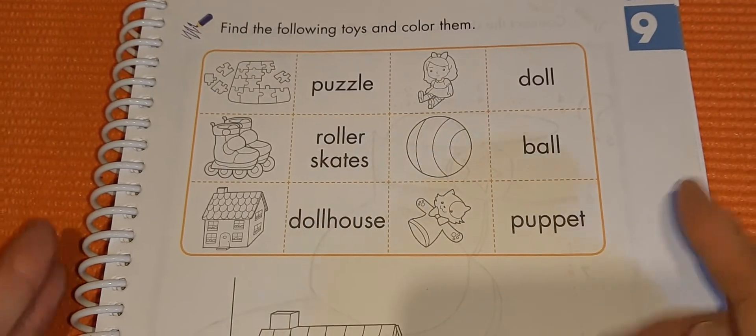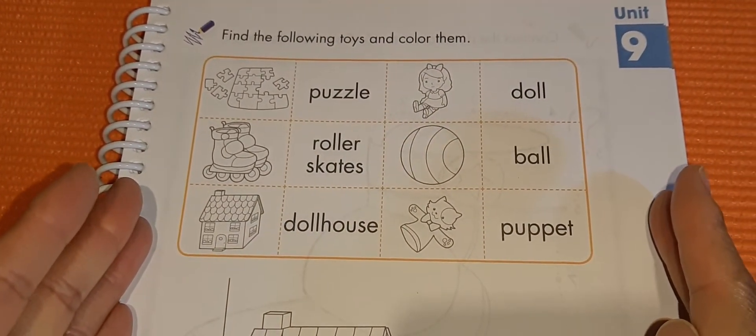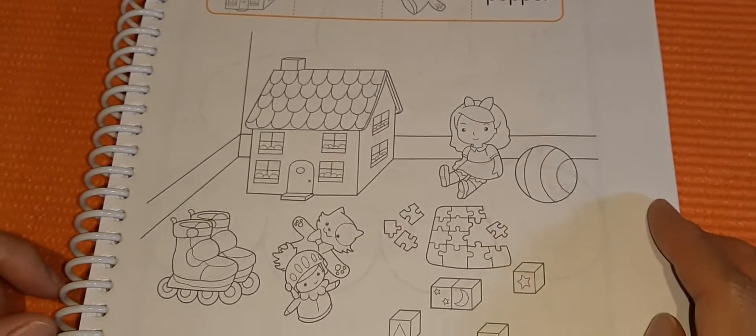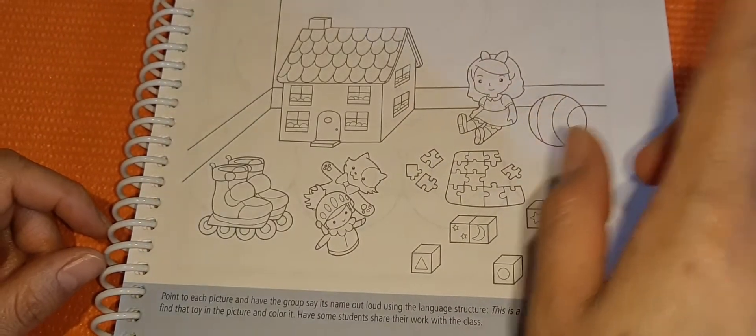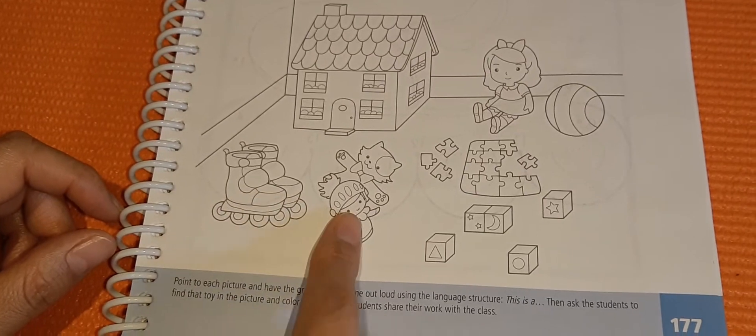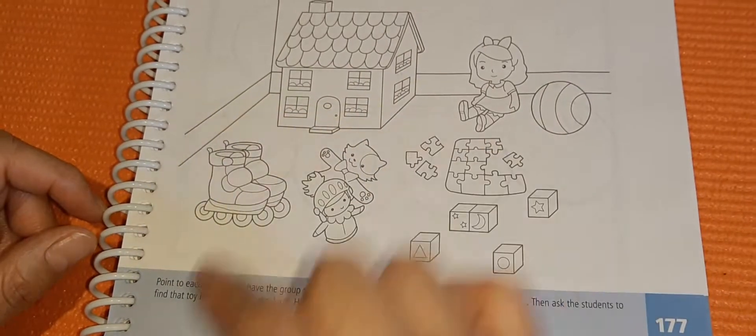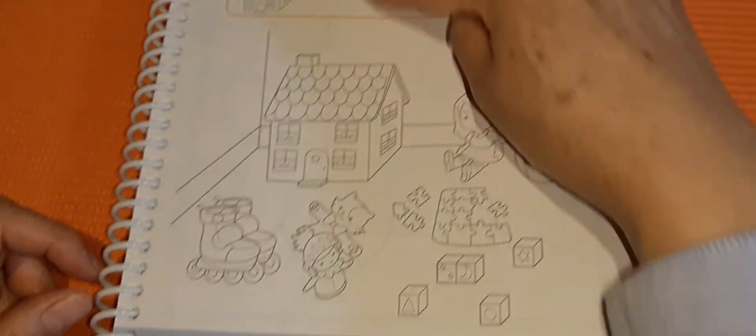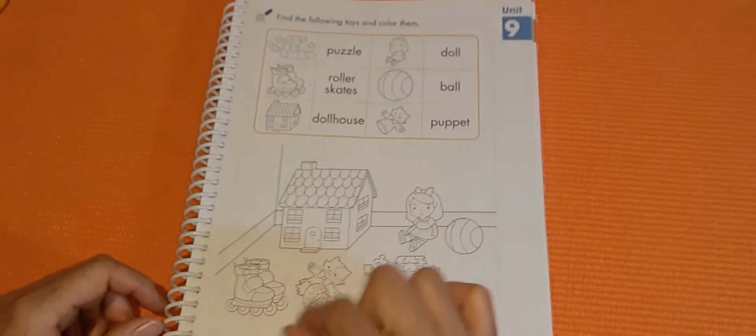Well, after you practice the reading about toys, you are going to find them and color them. You are going to find, like, the dollhouse, the roller skates, puppets, doll, ball, puzzle. And you need to color them. These don't because you don't have them right here. All right? You just color the toys.